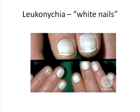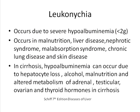Leuconychia, or white nails, as you can see in the diagram, is a chalk-white discoloration of the nails. It occurs in hypoalbuminemia and correlates with serum albumin of less than 2 grams. The normal lower limit of serum albumin is 3.5 grams. Nowadays we don't see Leuconychia that commonly, but we still do see it.